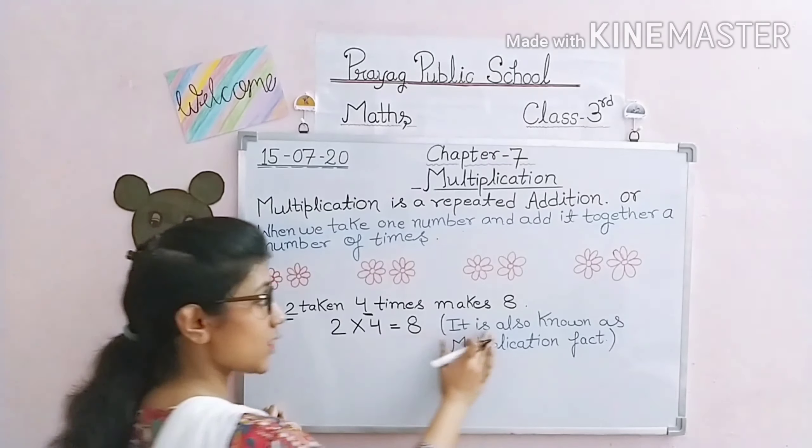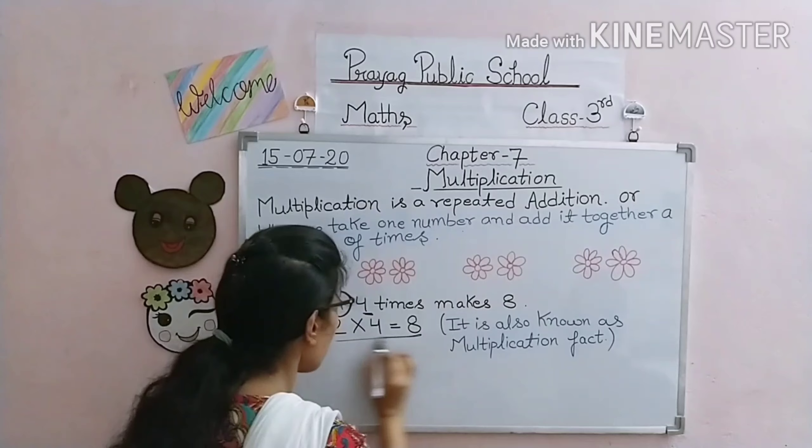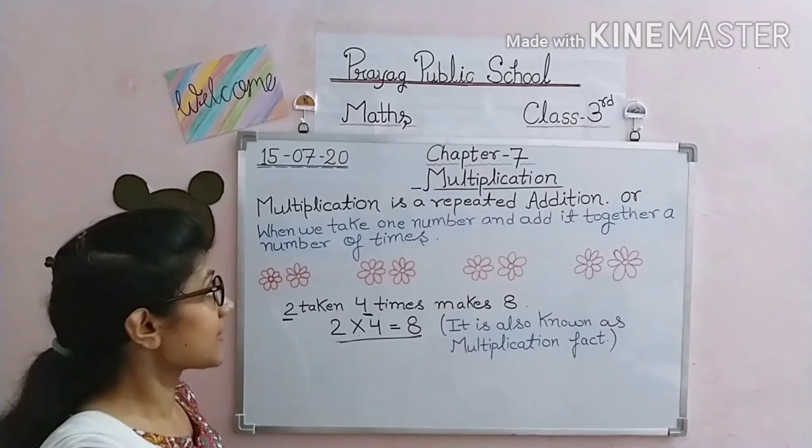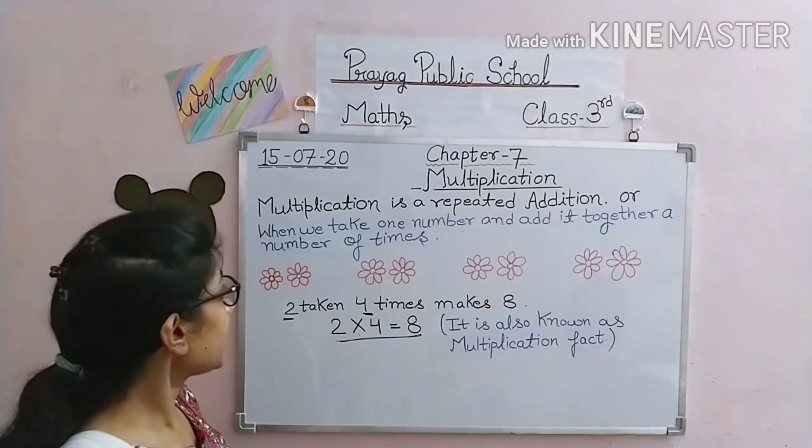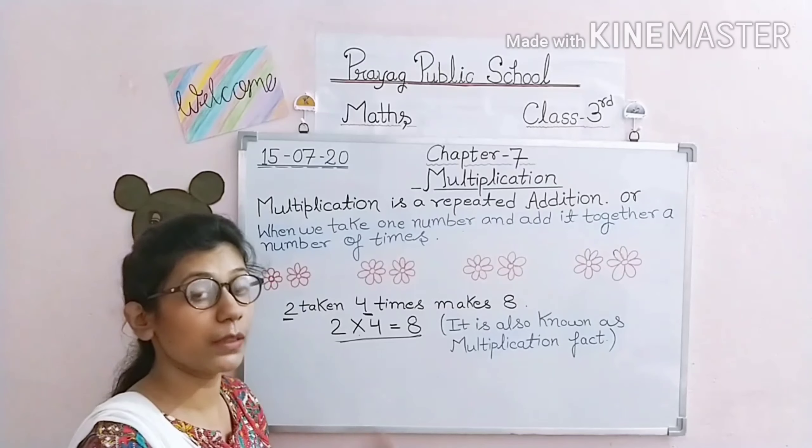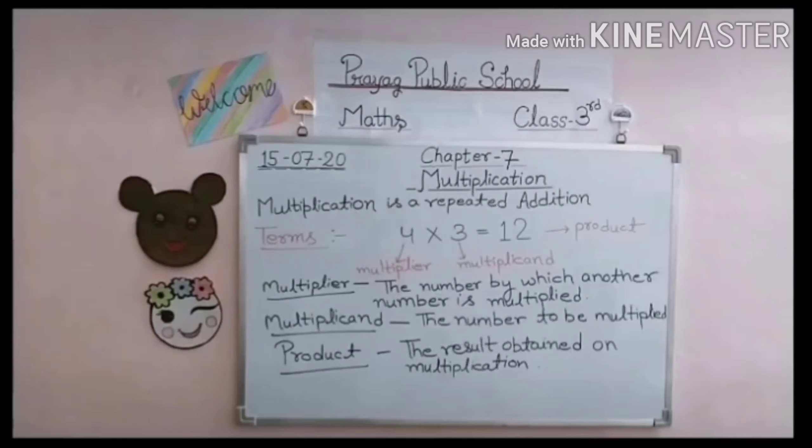So what do we call this? It is also known as multiplication fact. This form we call a multiplication fact because it shows the multiplication sign. Multiplication is a repeated addition, and when we take one number and add it together a number of times, we can also multiply to get the same result.